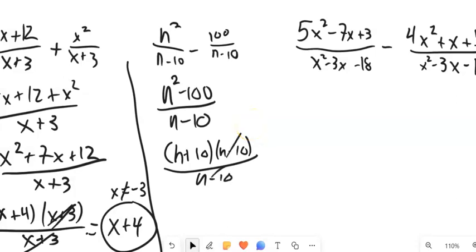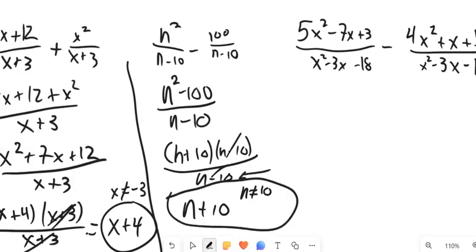So I can factor that to n plus 10 and n minus 10. This divides out, leaving me n plus 10. In this course, I'm not going to ask you to write this part, but there is one exception when n is 10, right? I lost that information that I was dividing by n minus 10 when I did that canceling. All right.